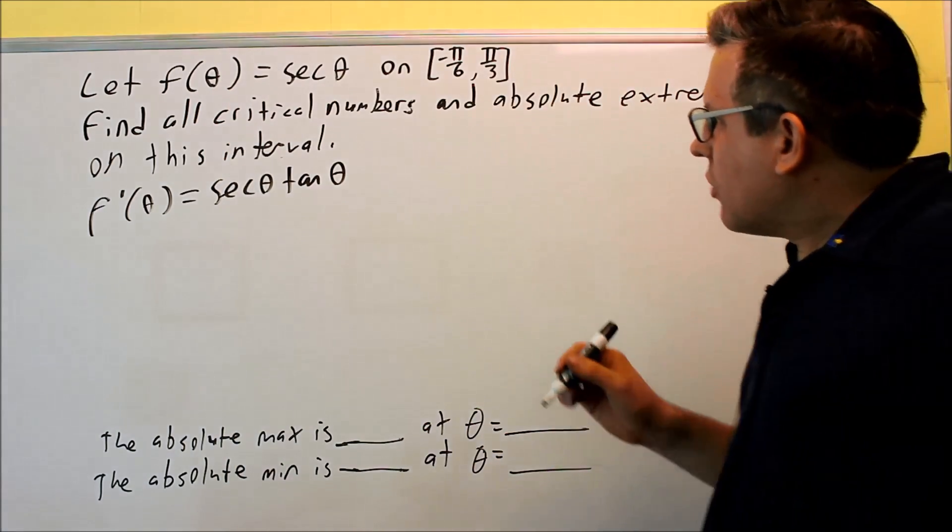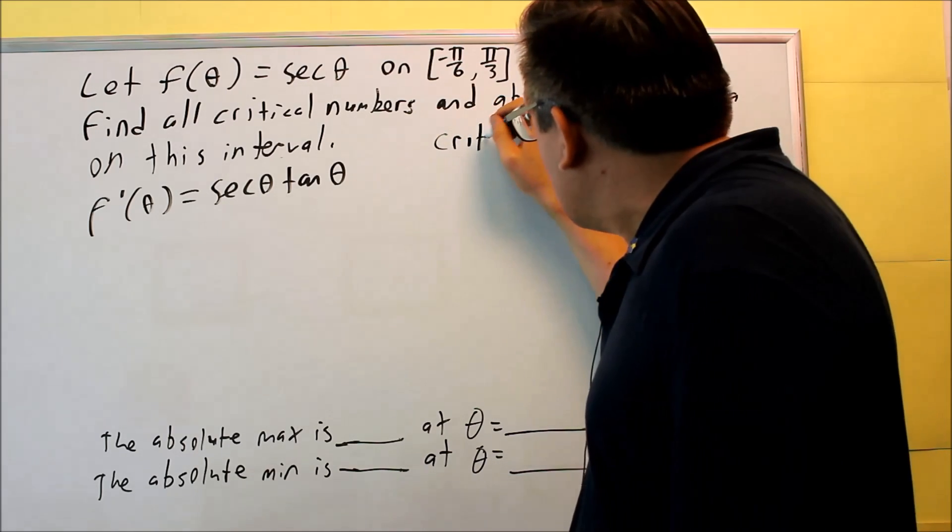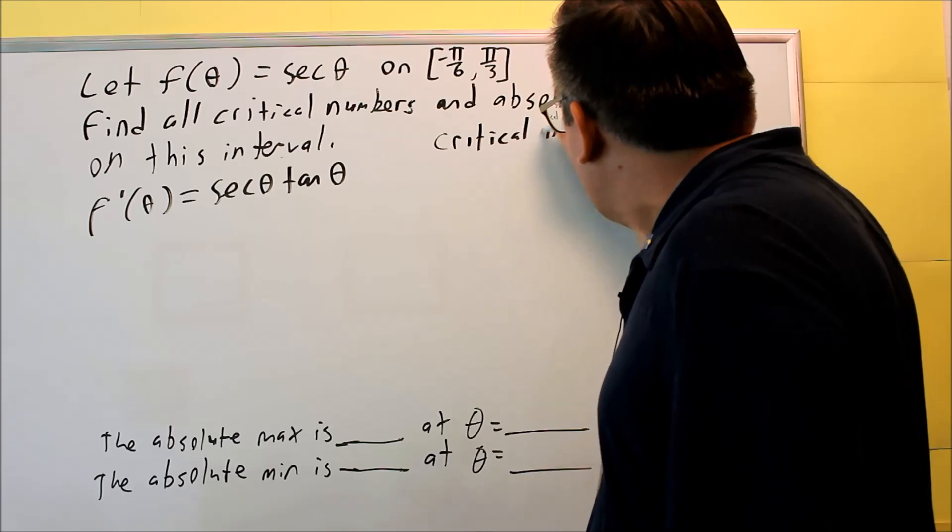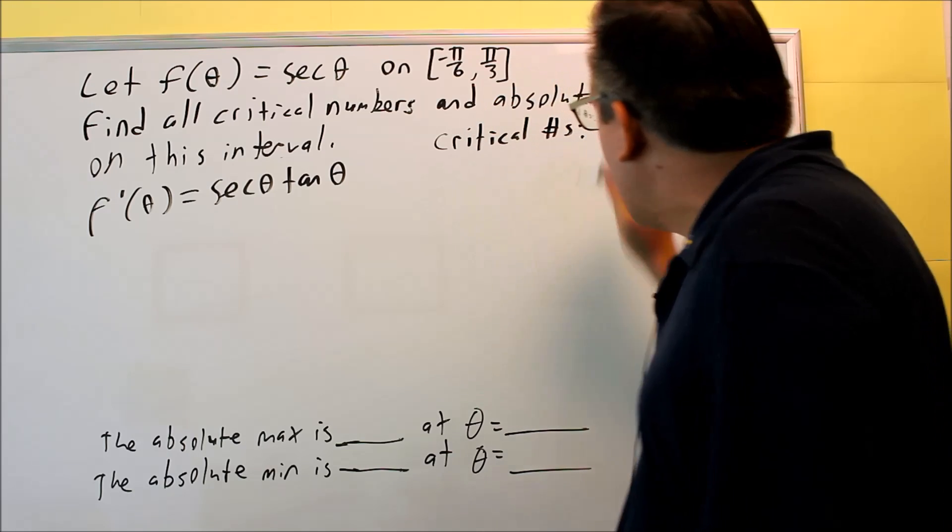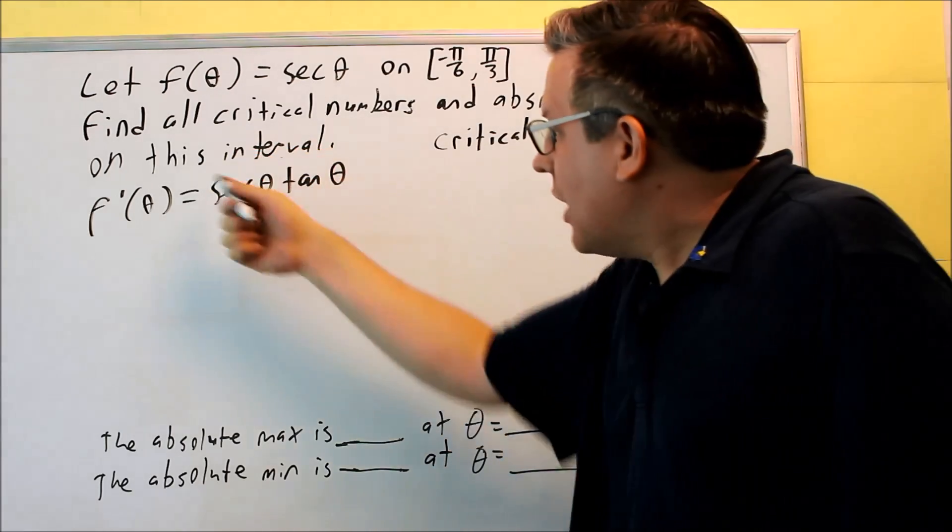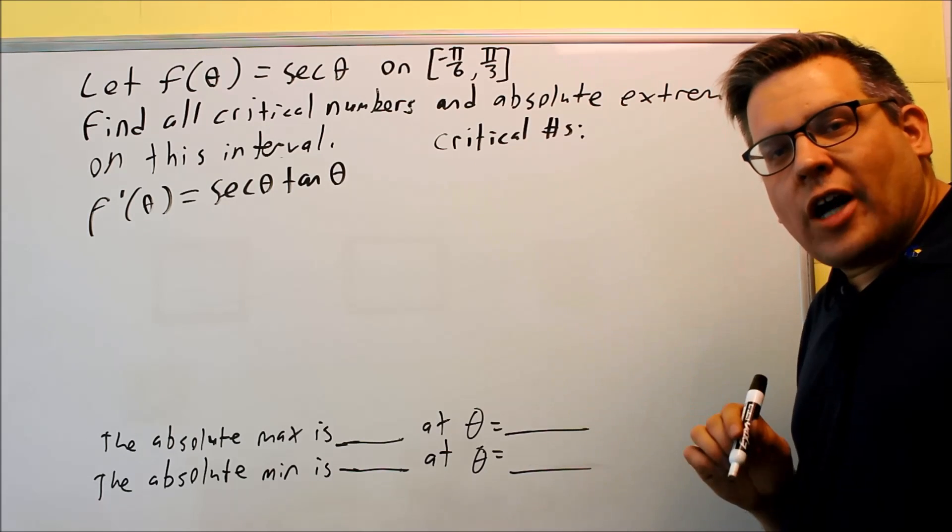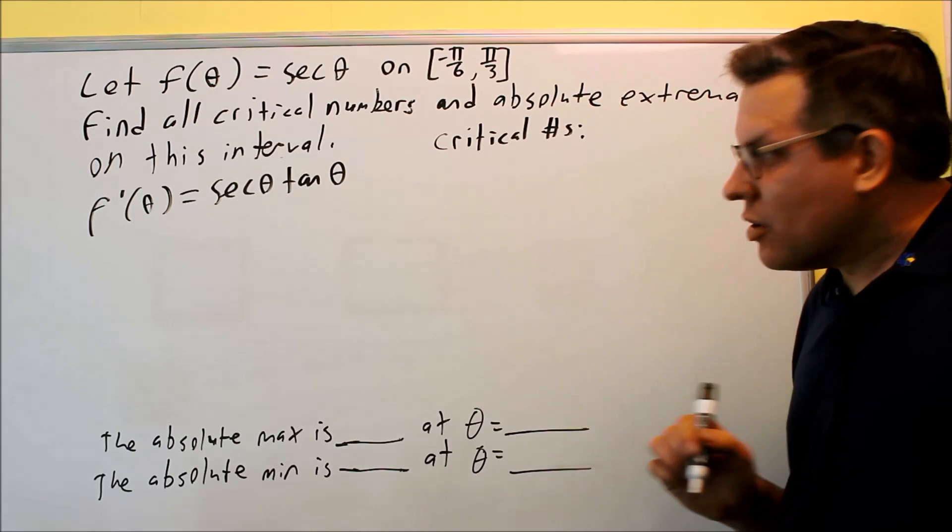Okay, so now we have to take a look at finding the critical numbers. I want to find out what my critical numbers actually are for this one. Two ways that you can find that. First thing, you look at any place where the derivative is going to be undefined. Okay, so undefined is going to occur when you're dividing something by zero.